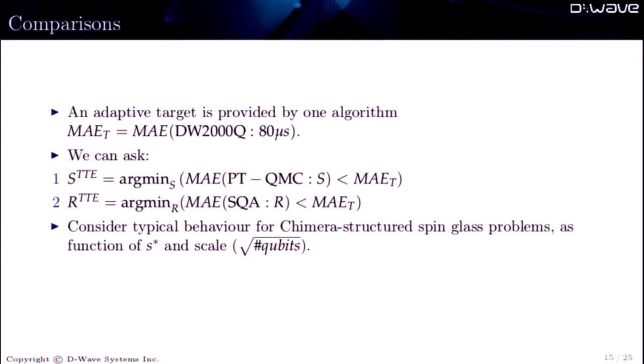And I'll just show some... We wanted to see if D-Wave is good for anything, basically, because these other two methods are very good. So what we did, finally, was we chose the target maximum absolute error from the D-Wave machine at, say, a given rate. And we can ask, how long in sweeps does the PTQMC estimator take? And what rate does SQA need to be run at to achieve the same error? And we're going to just show some results as a function of S and the scale of the problem.